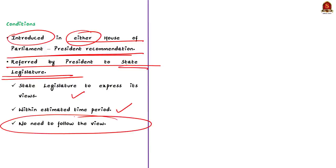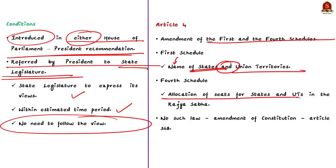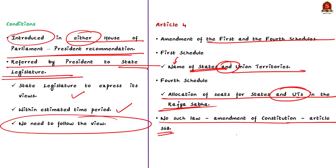Article 4 is not a separate article but also talks about Articles 2 and 3. It says that laws made under Articles 2 and 3 provide for the amendment of the First and Fourth Schedules. The First Schedule talks about the names of states and union territories, and the Fourth Schedule talks about the provisions in relation to allocation of seats for states and union territories in Rajya Sabha. Article 4 also mentions that no such law made under Articles 2 and 3 shall be deemed to be an amendment of the Constitution for the purposes of Article 368. Try to remember what Article 368 is — post your answer in the comment section.